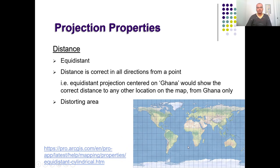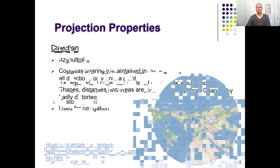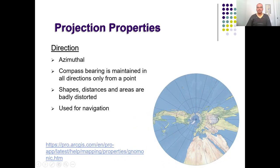If you want to maintain the property of distance properly from a particular location — say from Ghana — where all distances are represented accurately, you can prefer an equidistant map projection system. But this projection system greatly distorts area and shape. It maintains equidistance but does not maintain other properties.